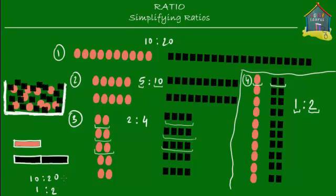So why call the relation 10 to 20 when it really is only 1 to 2? Why complicate things when it's actually just 1 to 2? Wherever possible, try to simplify your ratios so they are easy to understand and easy to work with.